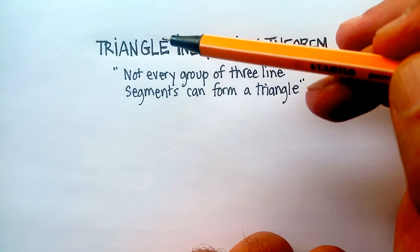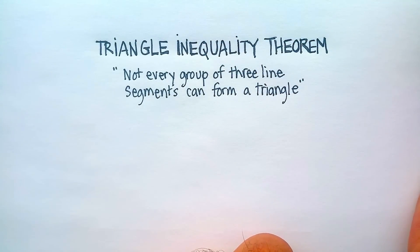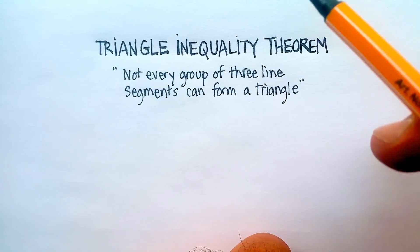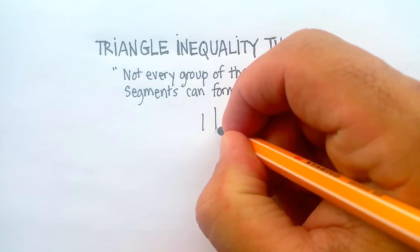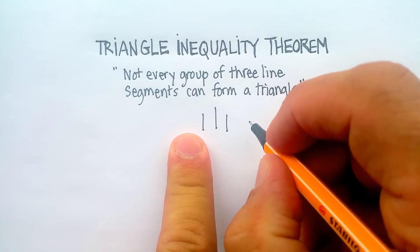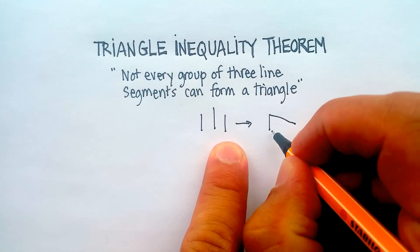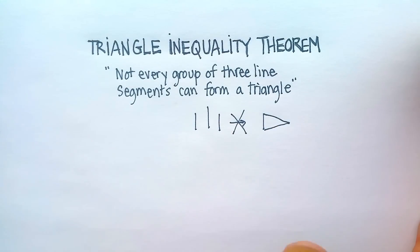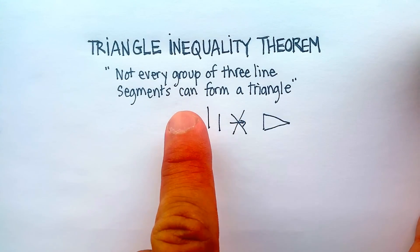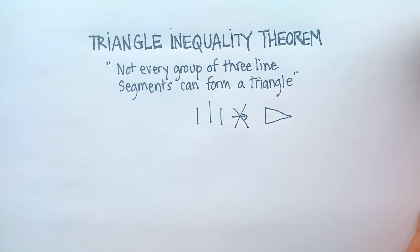In this video we're going to cover something called the triangle inequality theorem. Basically the theorem says this: not every group of three line segments can form a triangle. Which seems a little surprising — you would think that any three lines could form a triangle simply by rearranging them. But the reality is that's not true. They must follow a particular relationship.